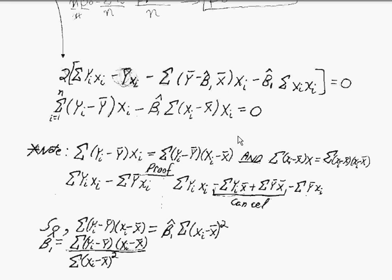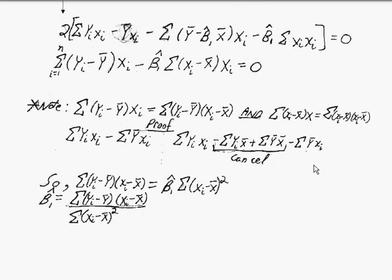We also do a similar substitution with x_i minus x-bar times x_i. That is the same as the sum of x_i minus x-bar times x_i minus x-bar, or just x_i minus x-bar squared. Making those substitutions, you can easily see that when we solve for beta-hat-one, the estimated slope, we get the formula that we saw before for the slope coefficient.